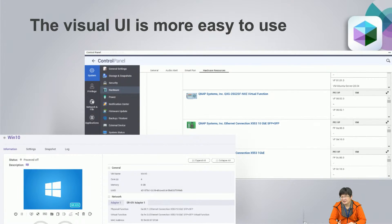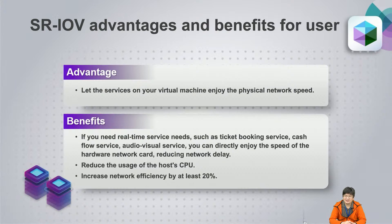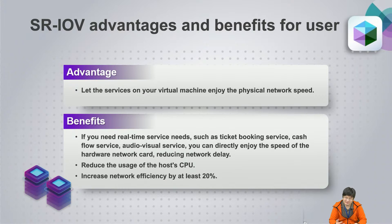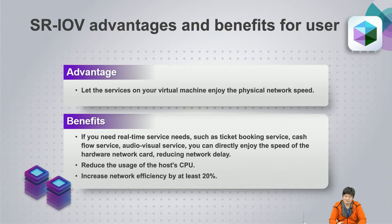We have a visual UI so you can use these features more easily. The SR-IOV advantage is that your VM service can use your physical network card speed directly. The benefit is for services needing real-time response, such as ticket booking, cash flow services, or video streaming that require stable network performance. You can use this function to directly use the network card performance, reduce CPU usage, and increase network performance by 20%.